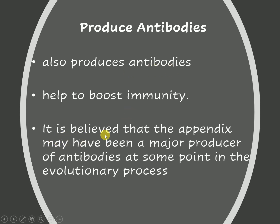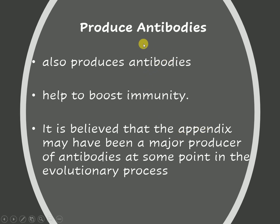It is believed that the appendix — the vermiform appendix — which is present in the first part of the large intestine, is a major producer of antibodies. Based on evolutionary processes and many studies, we know that the appendix produces and stores antibodies.